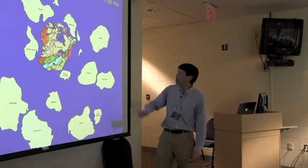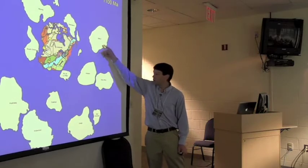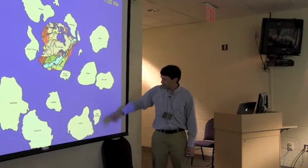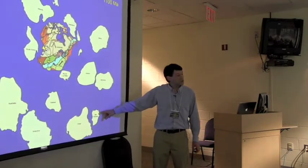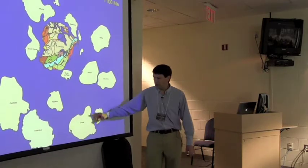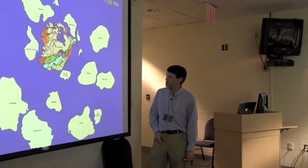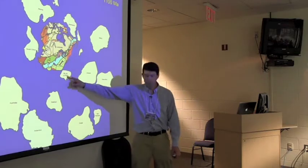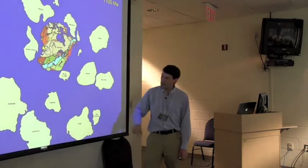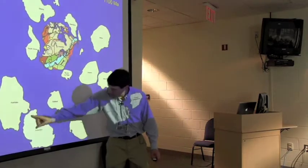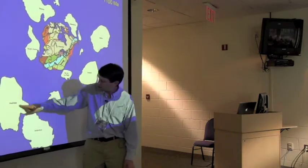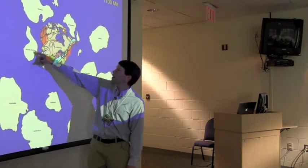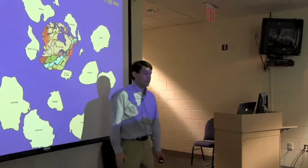Some of these other pieces don't. Baltica, which is Northern Europe, West Africa, Congo, South Francesco - these are all parts of Africa today. Kalahari, that's part of Africa today. Amazon and Rio de la Plata, those are parts of South America today. Here's much of Antarctica down here, Australia over here, South China, Siberia. You get the idea, right? There's bits and pieces of stuff all over the place.